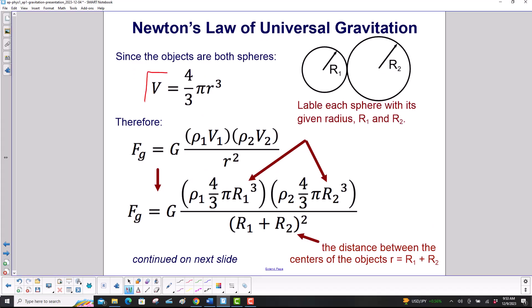Since the objects are both spheres, we use this volume formula, and we'll label each sphere with its given radius r₁ and r₂. So this equation here, which we have from the previous slide, we replace volume in each case with this factor here.